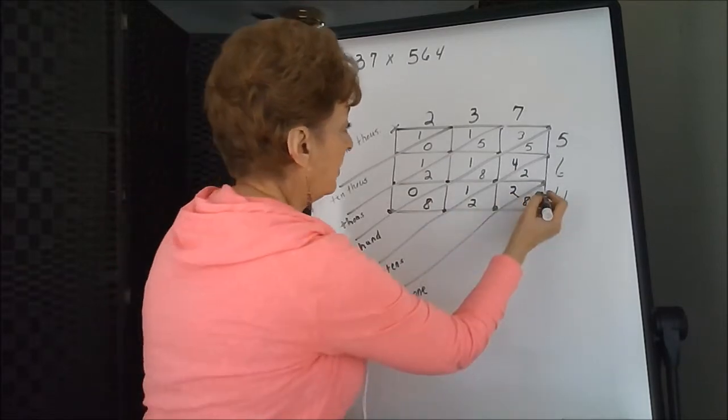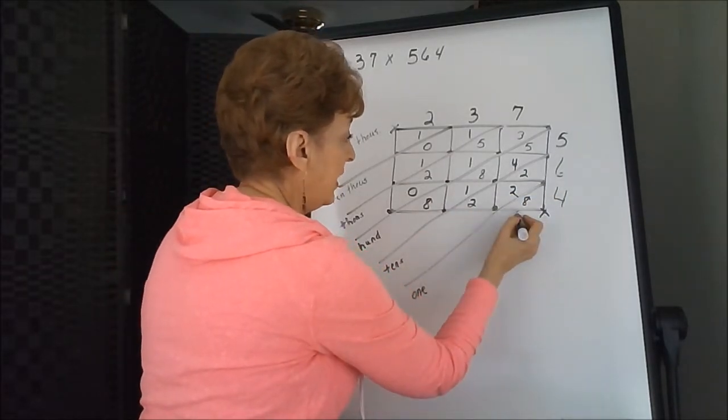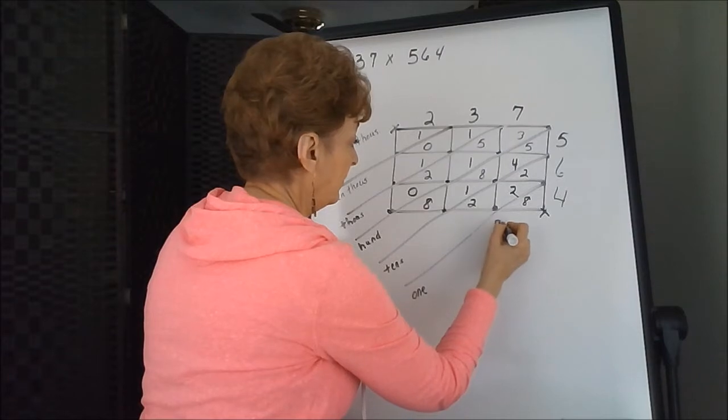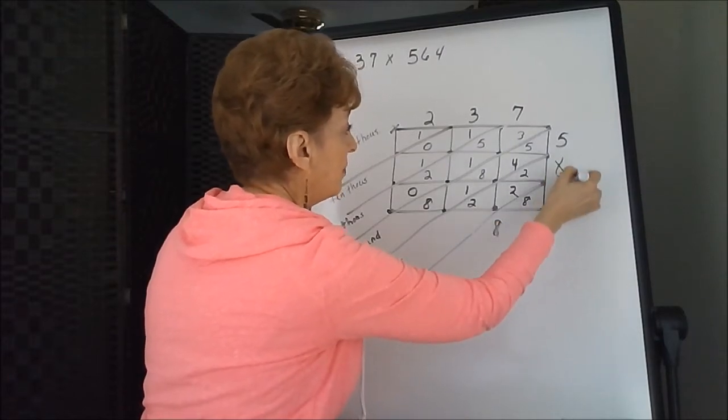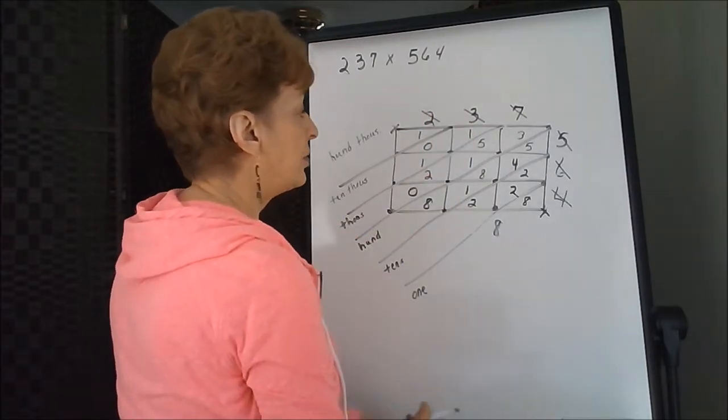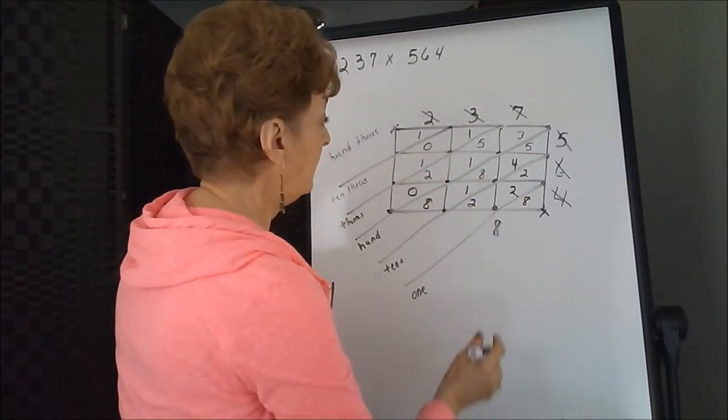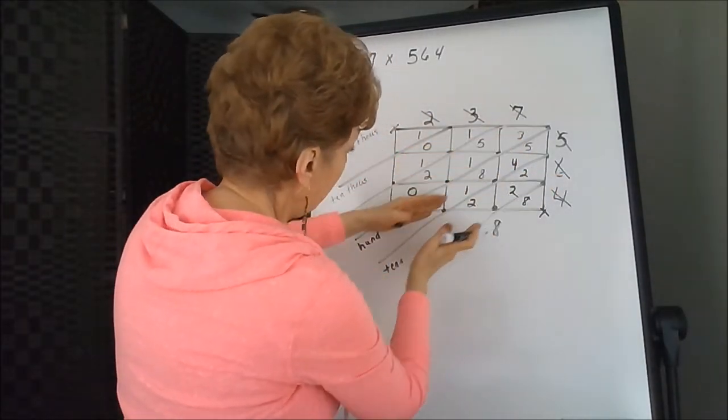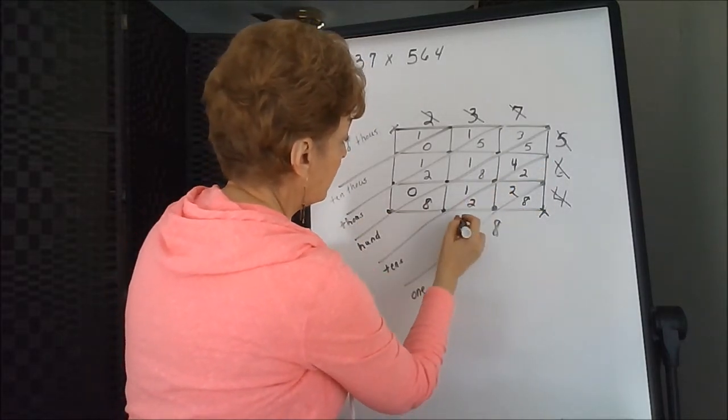The first diagonal into the ones column, we only have eight. Remember these numbers get eliminated after we fill in the grid. The tens column, we have two plus two plus two is six.